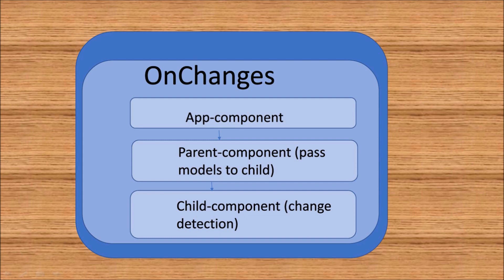The whole reason for implementing this is that whenever we pass the models to the child component, the child component should automatically know what changes were done to the model. That is, if something changes in the parent, the child should know it. That's the reason we implement the OnChanges class on the child component.